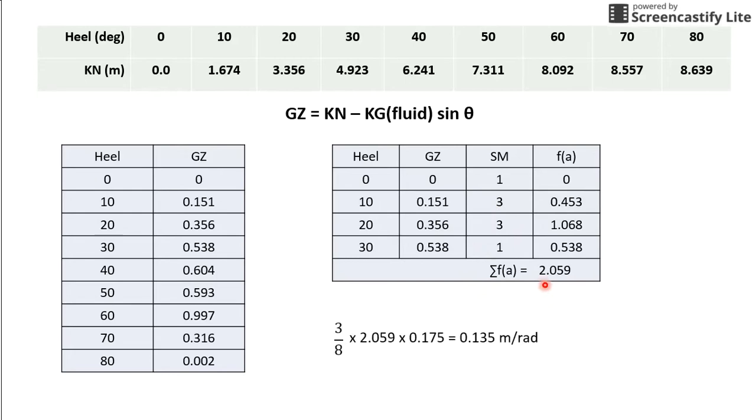The next step would be to use this formula 3 over 8 times the summation of f(a) times 0.175 which equals to 0.135 meter radian. And how I go about getting 0.175 is actually 10 degrees equals to 0.175 radian. So, where do I get the 10 degrees is actually the difference between each heel angle.